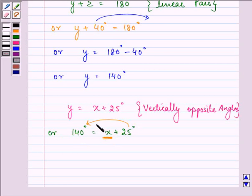Transposing 25 degrees from right-hand side to left-hand side and changing its sign, we get 140 degrees minus 25 degrees equal to x. That is equal to 115. So the value of x is 115.